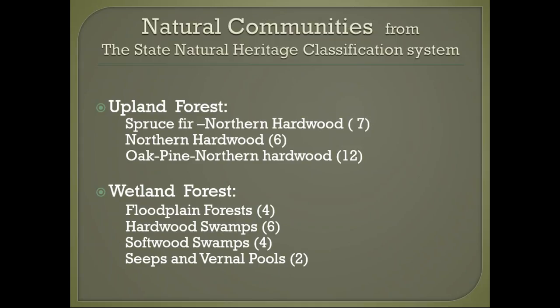We classify our ecosystems by natural communities. In Vermont we have around 90 or so natural communities—some are wetland communities, others are upland forests. For forest ecology today we'll consider the upland forest and the wetland forest. Northern hardwood is our primary matrix forest with six different types. Oak-pine northern hardwoods have 12 different types and spruce-fir northern hardwoods have seven. In the wetland forest category, we look at floodplain forests, hardwood swamps, softwood swamps, and smaller forested wetlands like seeps and vernal pools.